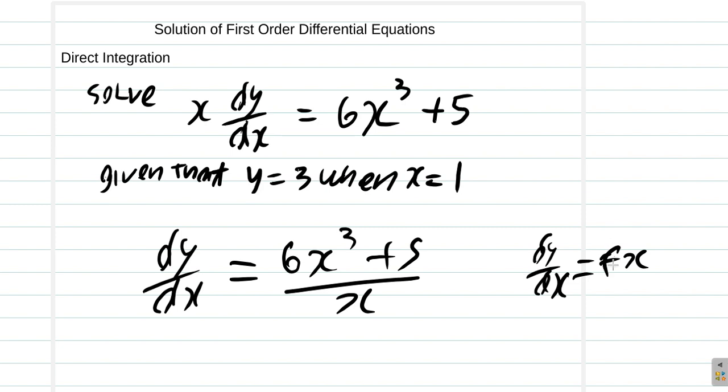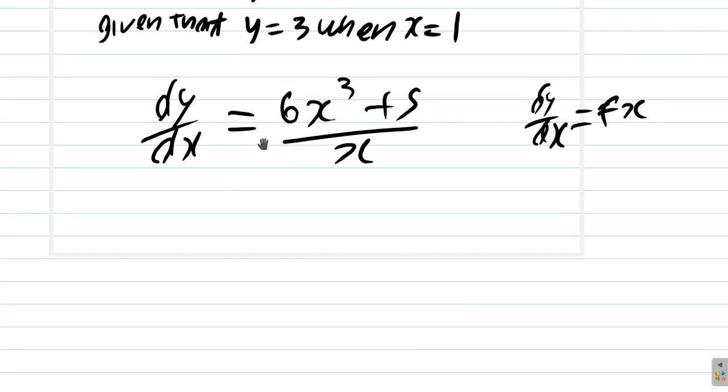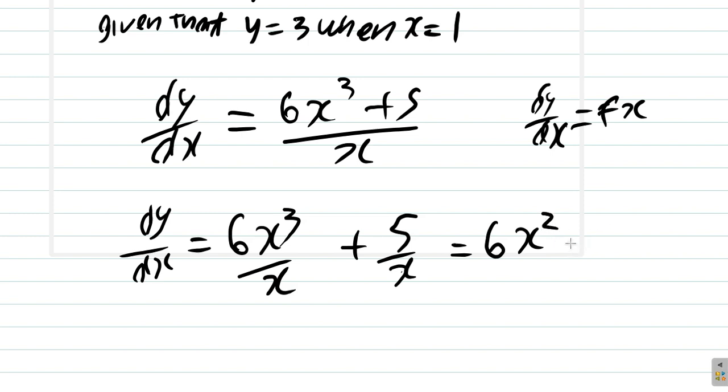Once you can write it in the form dy/dx equals f(x), you can solve it by direct integration. Let's rewrite this part, so dy/dx is equal to 6x³ over x plus 5 over x, which is really 6x² plus 5x to the negative 1. Let's rewrite it here and go for the integration.